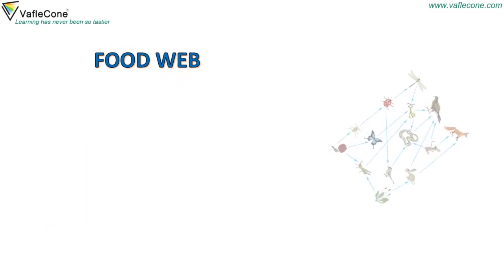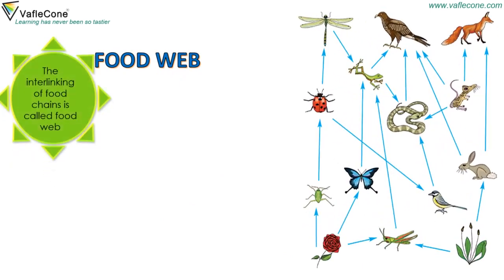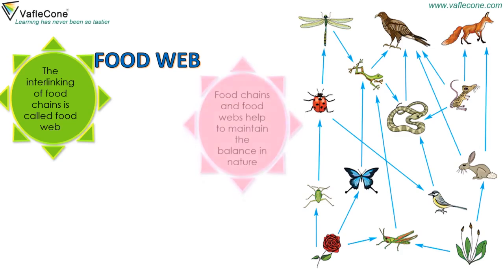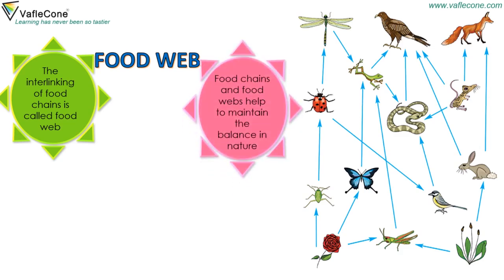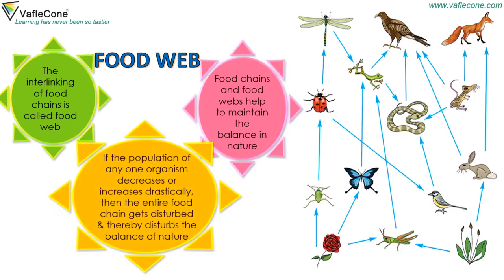The interlinking of food chains is called a food web. Food chains and food webs help to maintain the balance in nature. If the population of any one organism decreases or increases drastically, then the entire food chain gets disturbed and thereby disturbs the balance of nature.